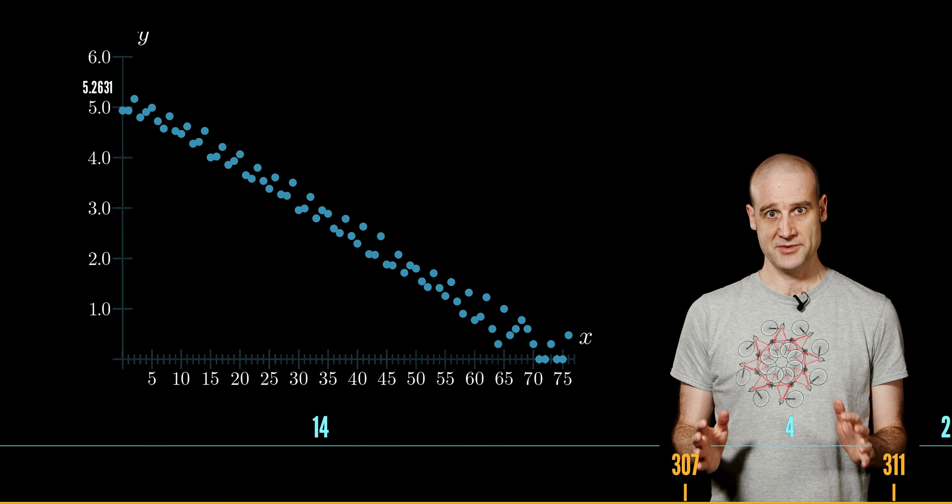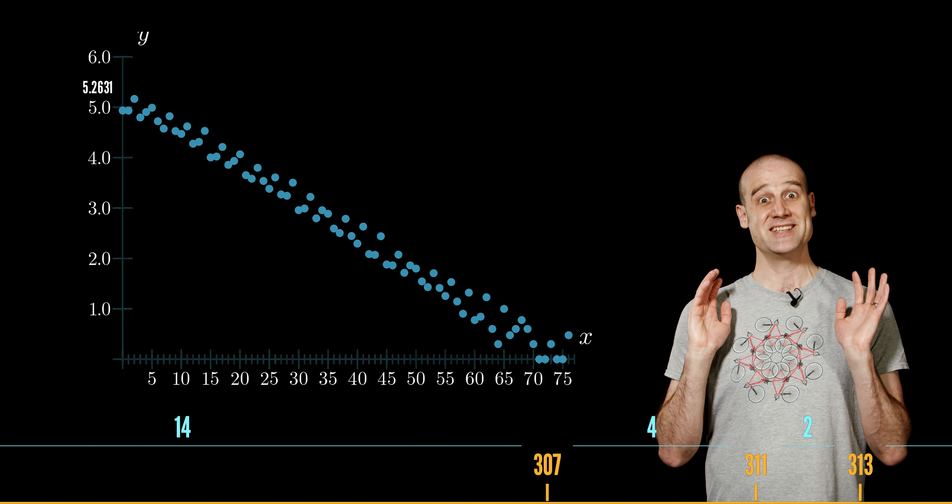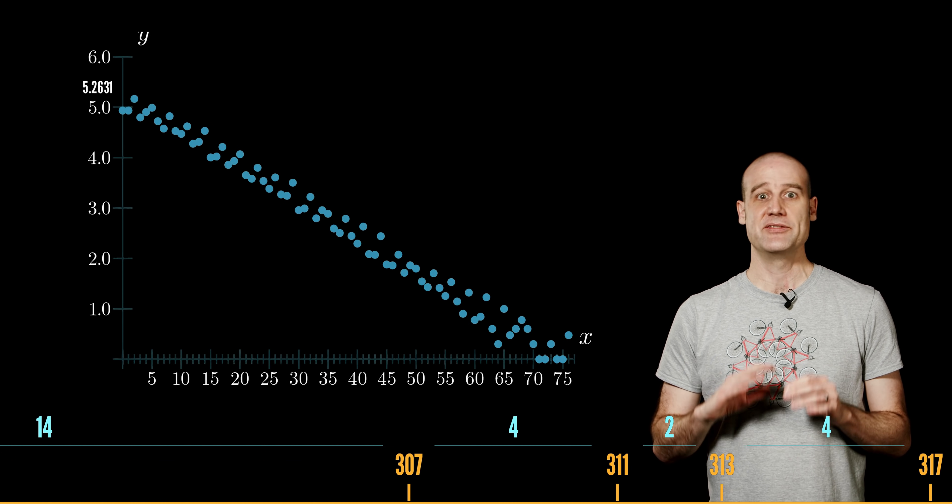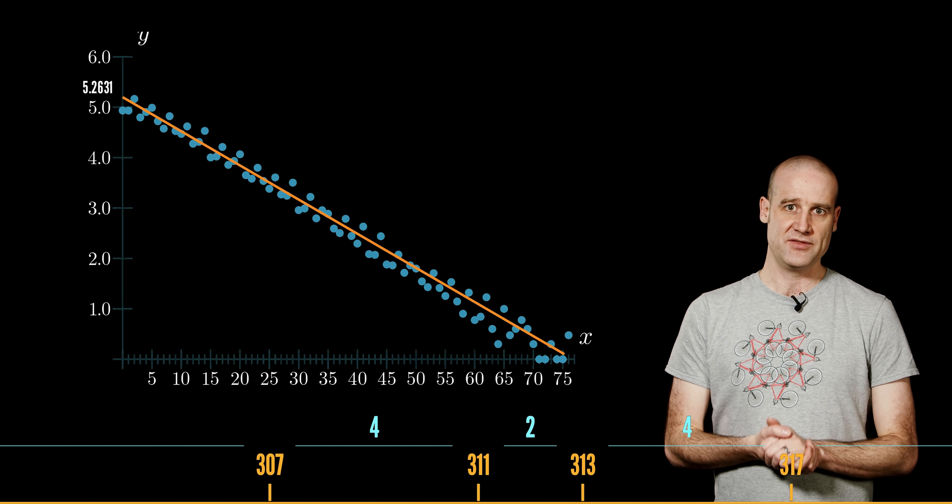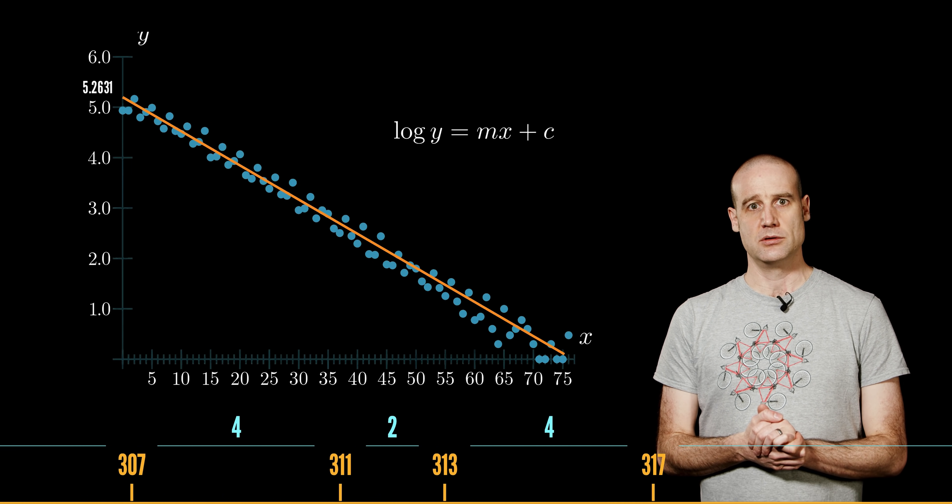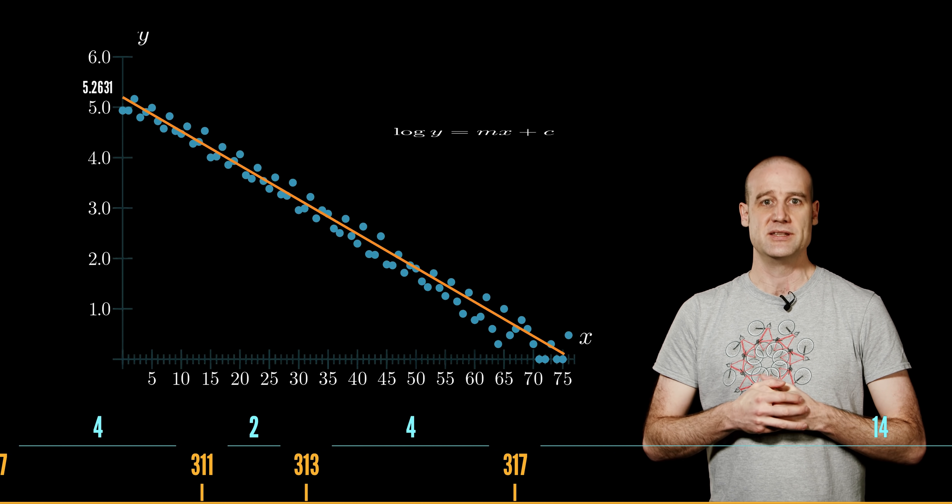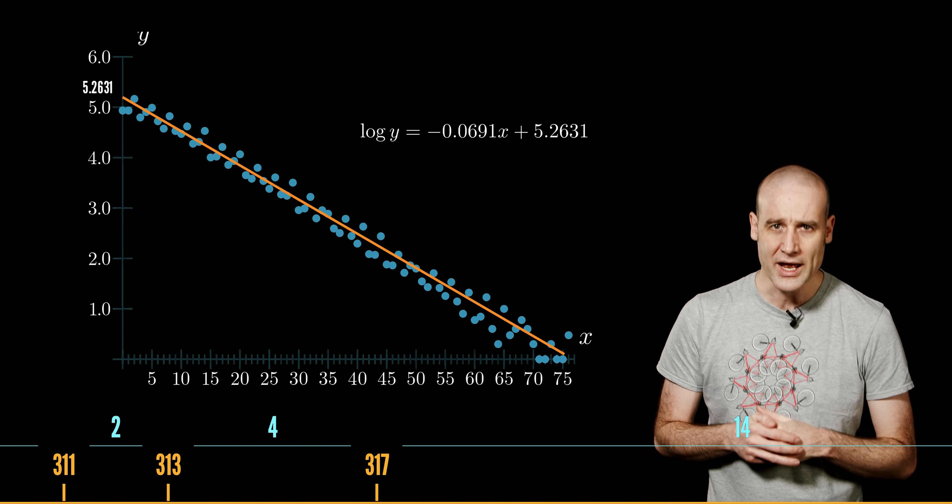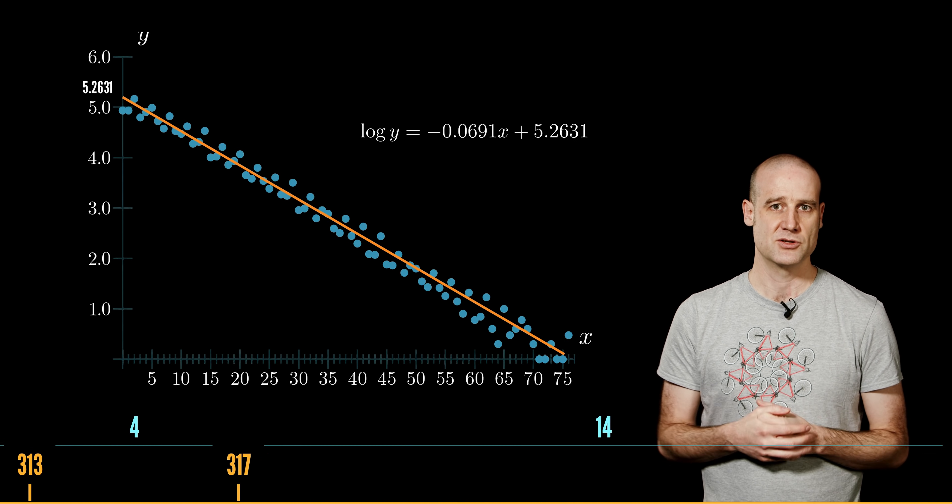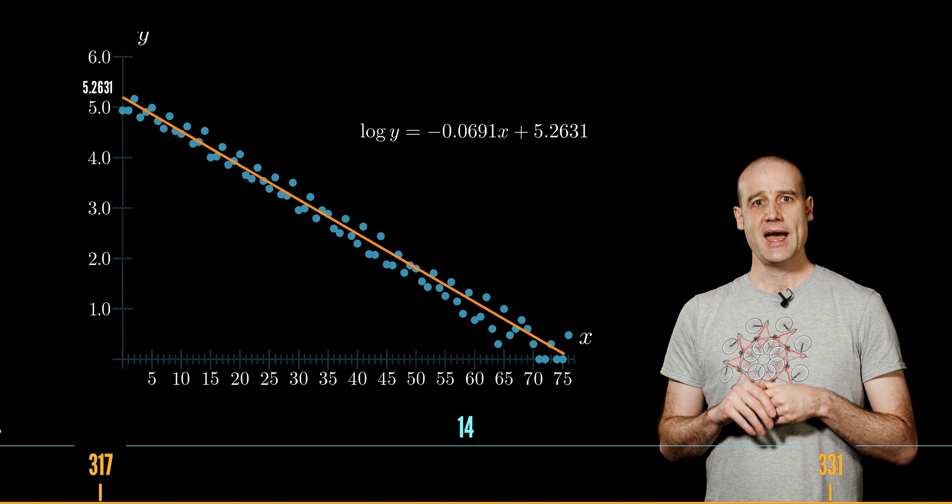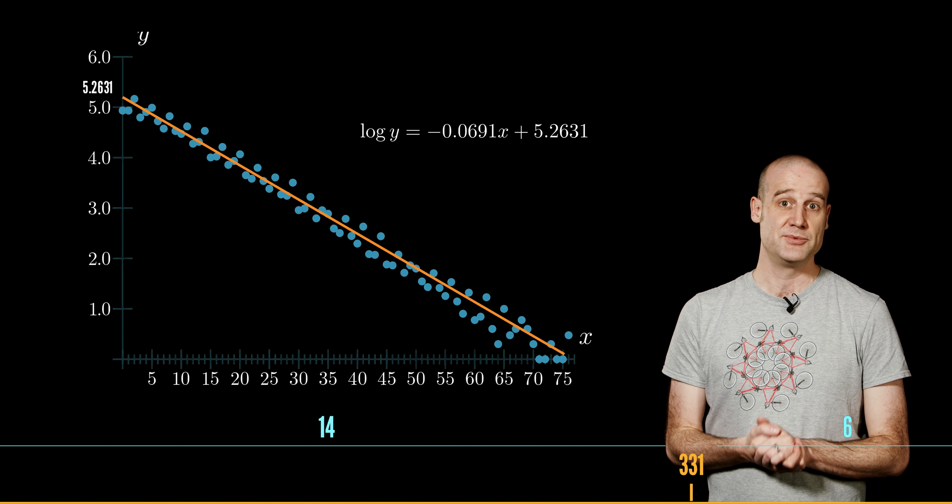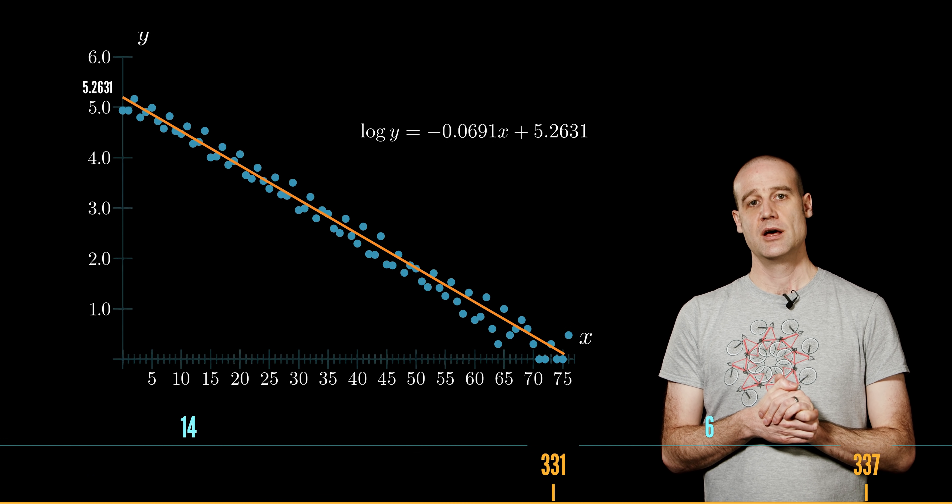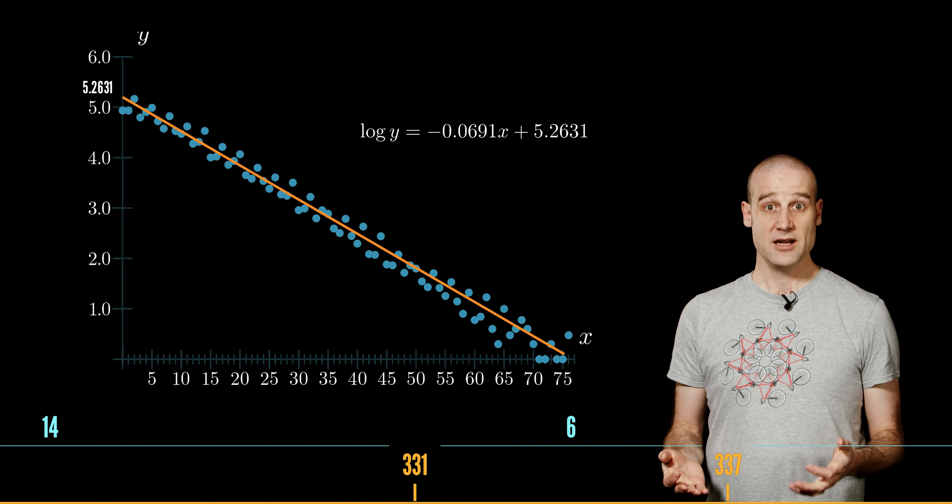So in this specific case, we're looking at the first 1 million primes, and I've plotted it in base 10. So if you actually work out the equation of the line of best fit down the middle, it's got a gradient of negative 0.0691 times x. Let's call the horizontal axis x for now. And it's got a y-intercept of 5.2631. So that's our linear equation.